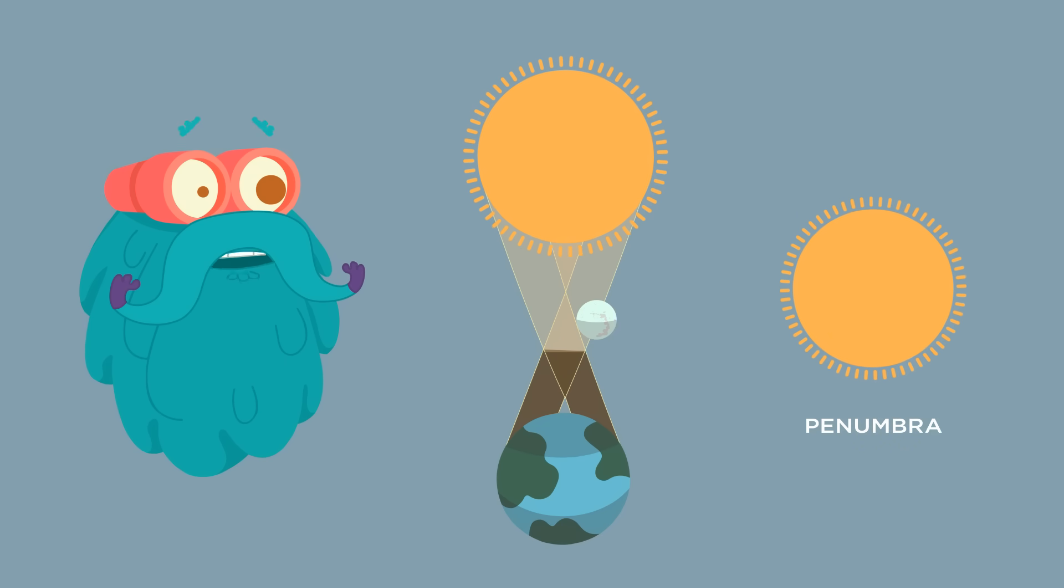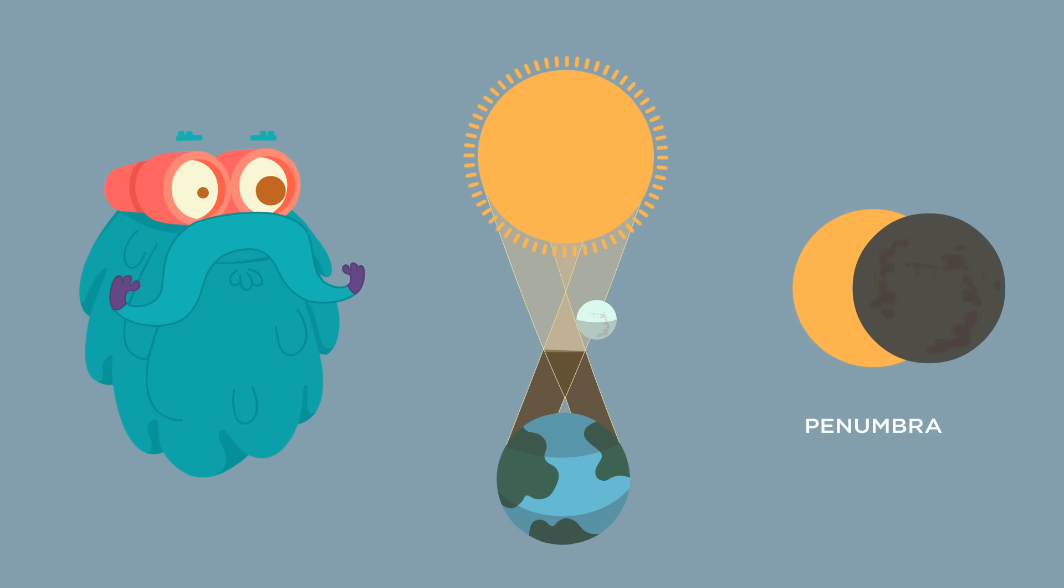Penumbra is the area of the shadow where only a portion of the Moon is in front of the Sun. This is when the partial solar eclipse occurs, which lets you see only a part of the Sun.